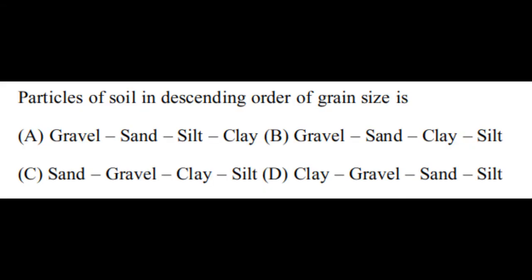Let us now see past year GATE question papers. The first question is: particles of soil in descending order of grain size is — Option 1: gravel, sand, silt, clay. Option 2: gravel, sand, clay, silt. Option 3: sand, gravel, clay, silt. Option D: clay, gravel, sand, silt. As we have already discussed, the particles of soil in descending order of grain size is gravel, sand, silt, clay.